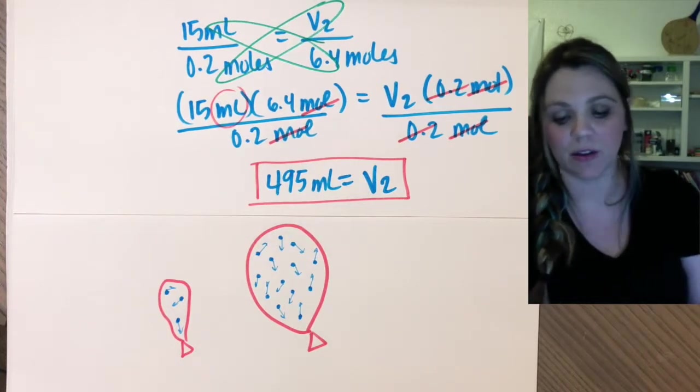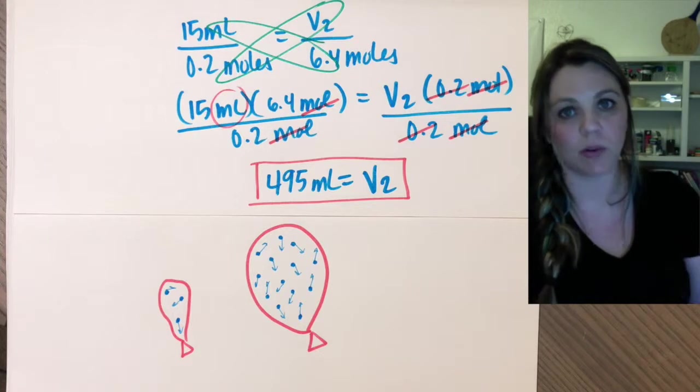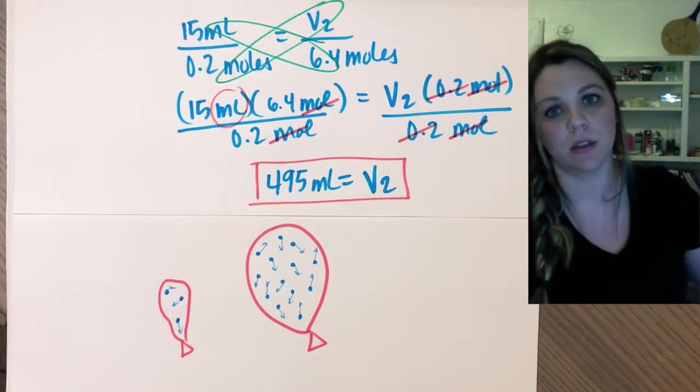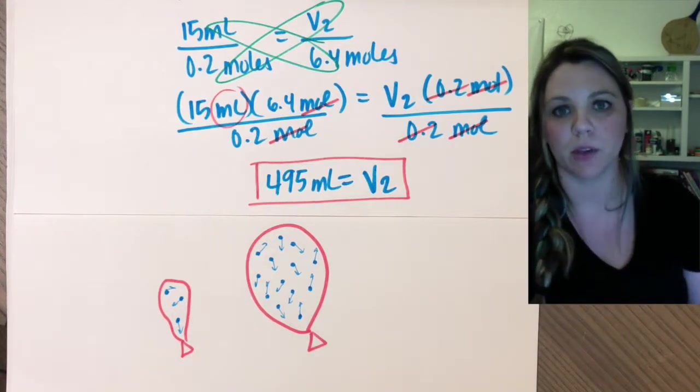And that's it. Avogadro's is really easy, very easy concept to understand. The more moles you have, the bigger the volume, the less moles you have, the smaller the volume.